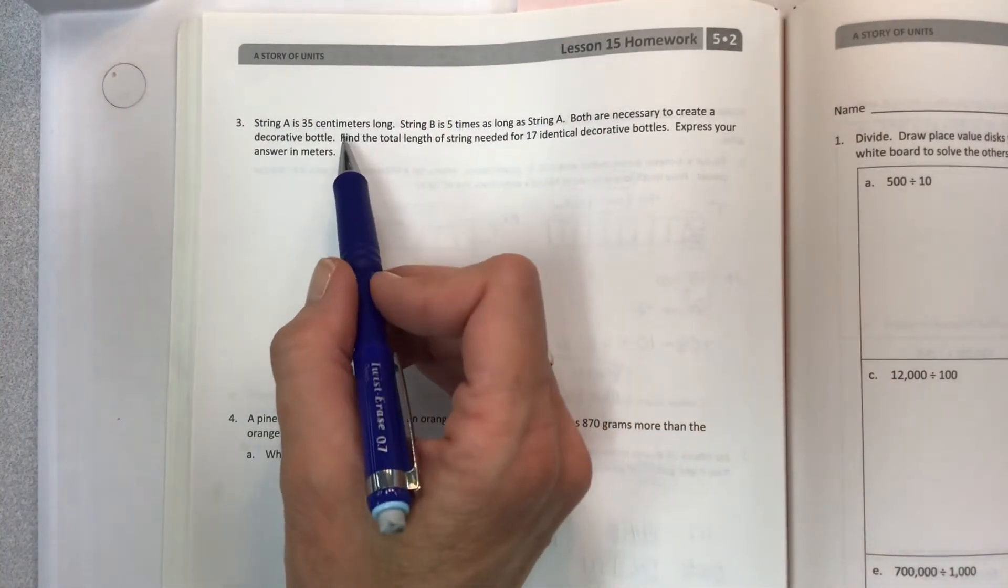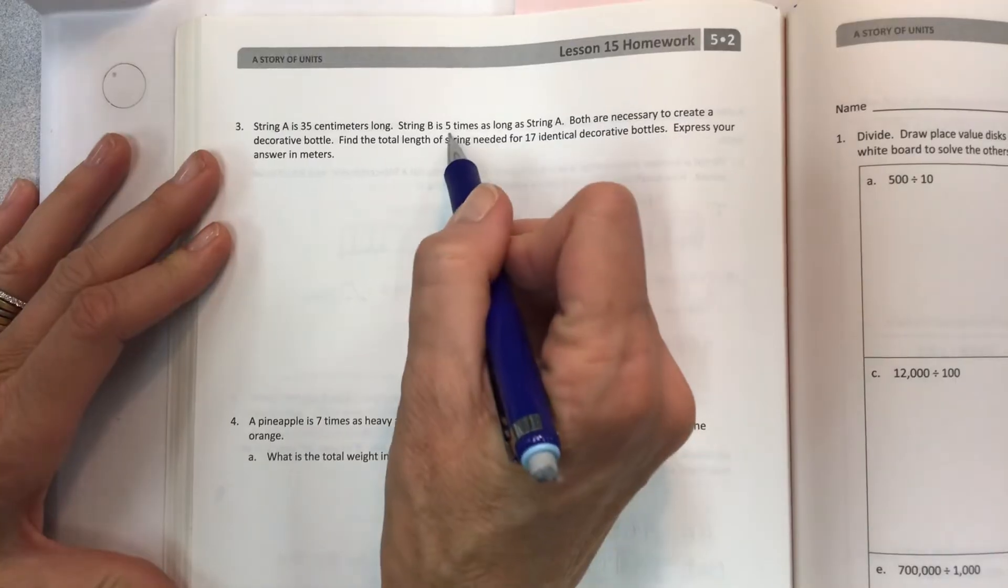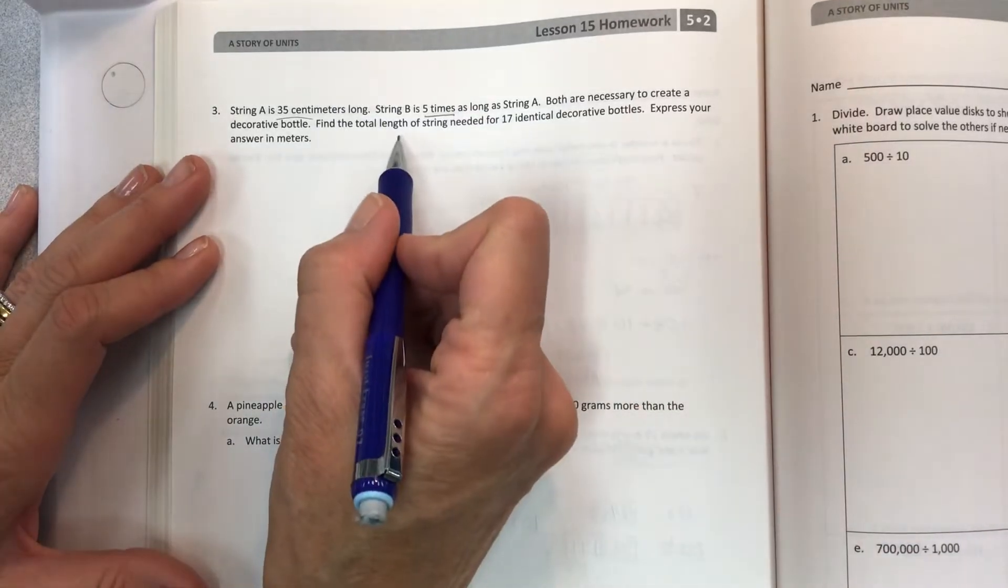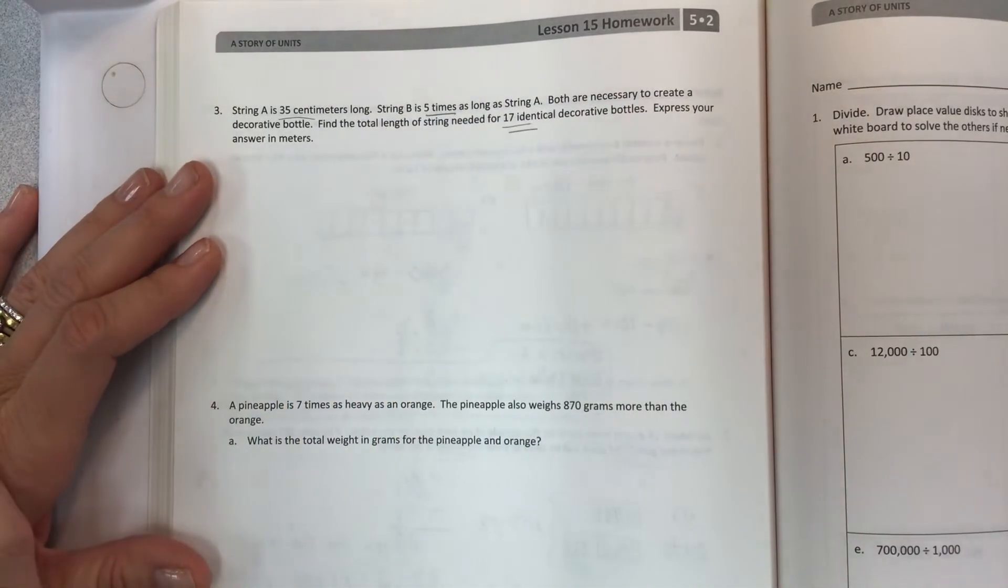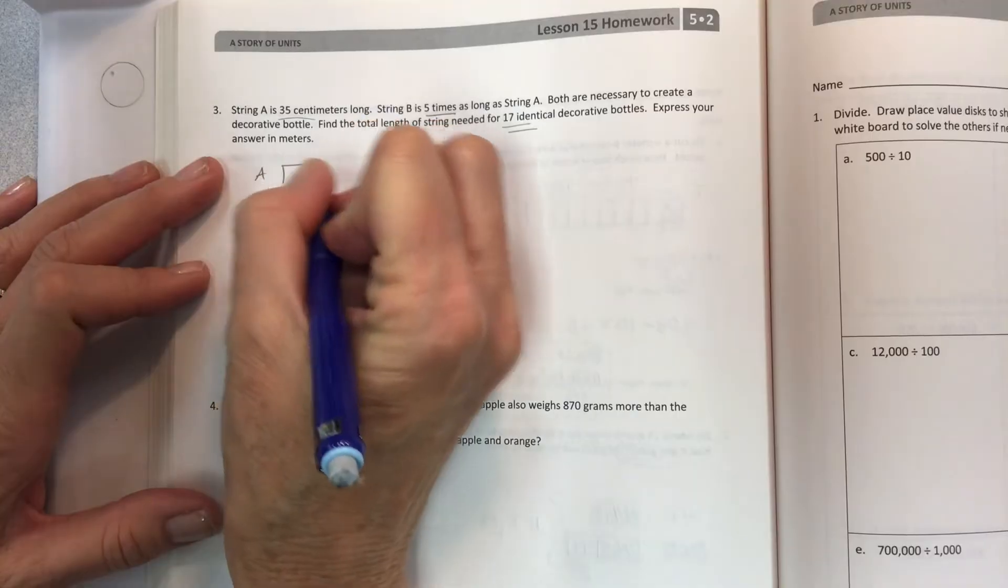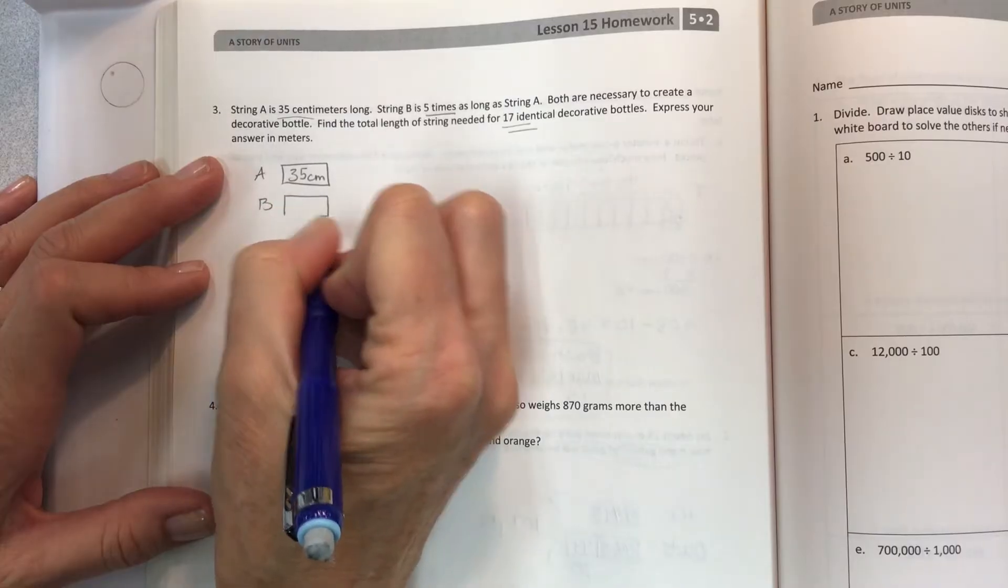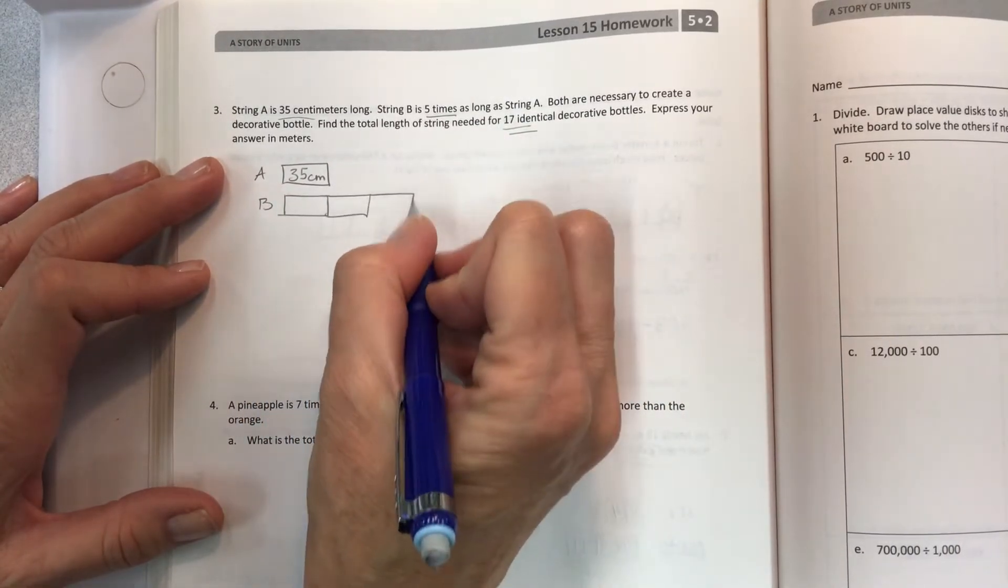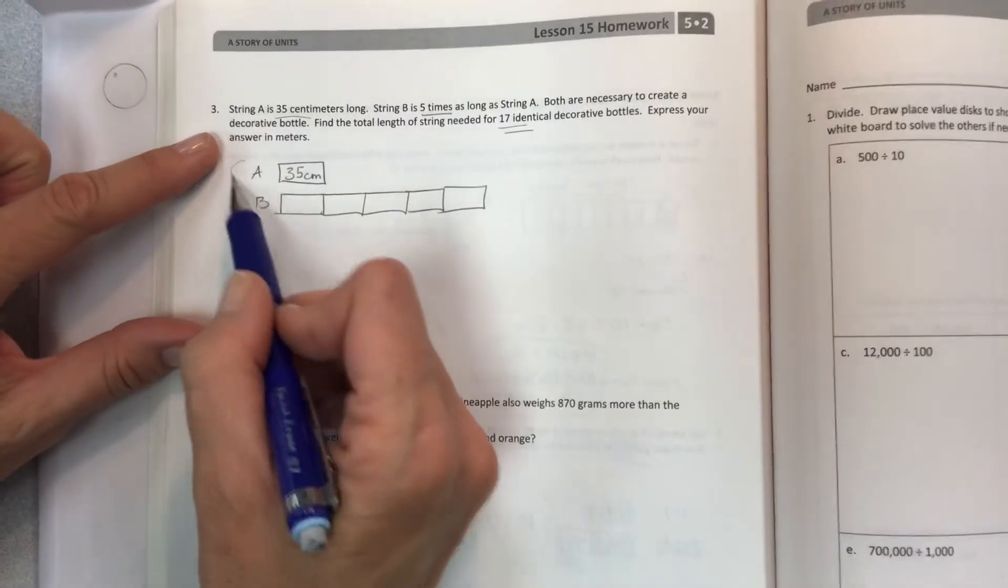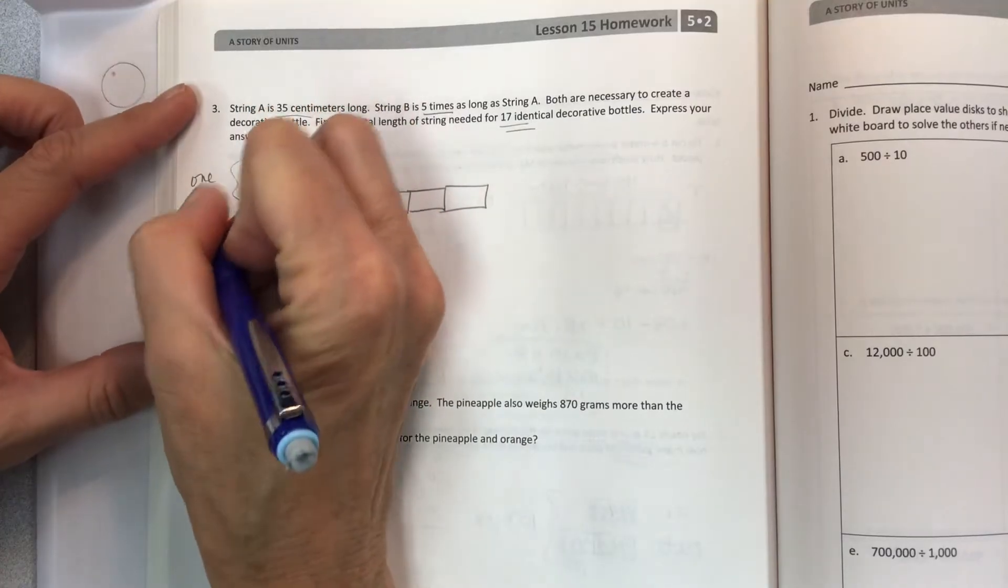Number 3. String A is 35 centimeters long. String B is 5 times as long as string A. This is going to be really helpful right here. Both are necessary to create a decorative bottle. Find the total length of string needed for 17 decorative bottles. Express your answer in meters. So if you take string A at 35 centimeters, and then string B is 5 times as long. But both are necessary to create the bottle. So I need all this.